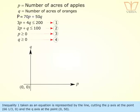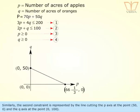Inequality 1 taken as an equation is represented by the line cutting the p axis at the point (66⅓, 0) and the q axis at the point (0, 50). Similarly, the second constraint is represented by the line cutting the p axis at the point (50, 0) and the q axis at the point (0, 100).